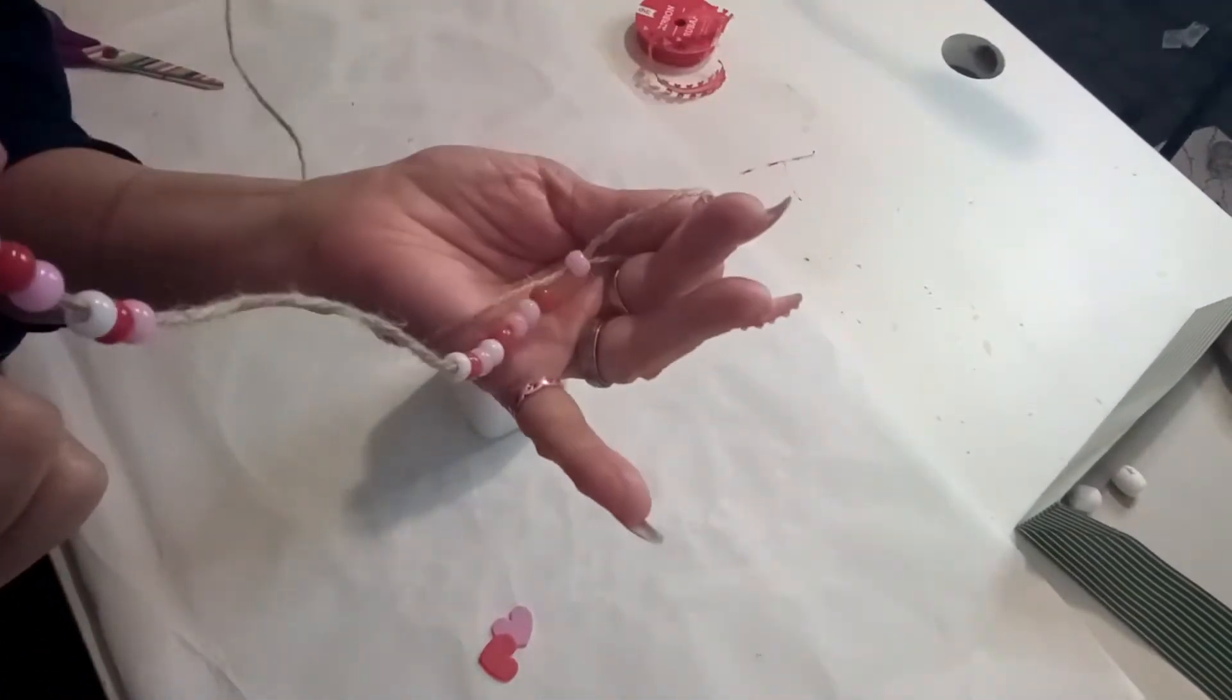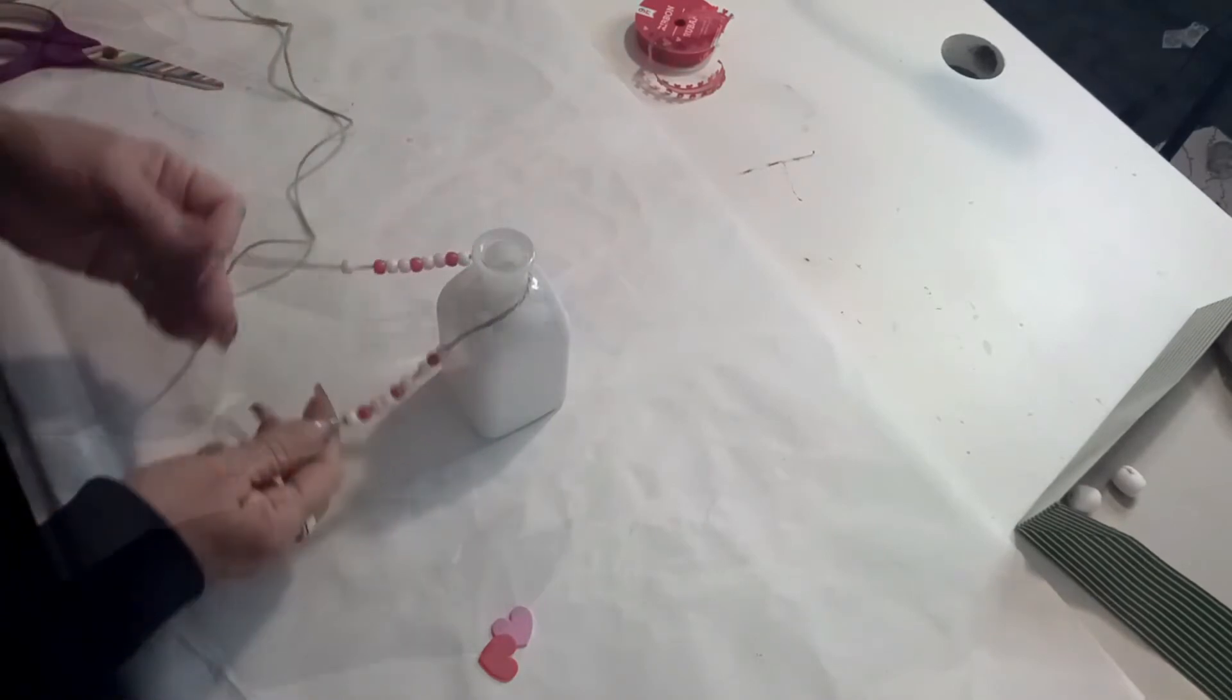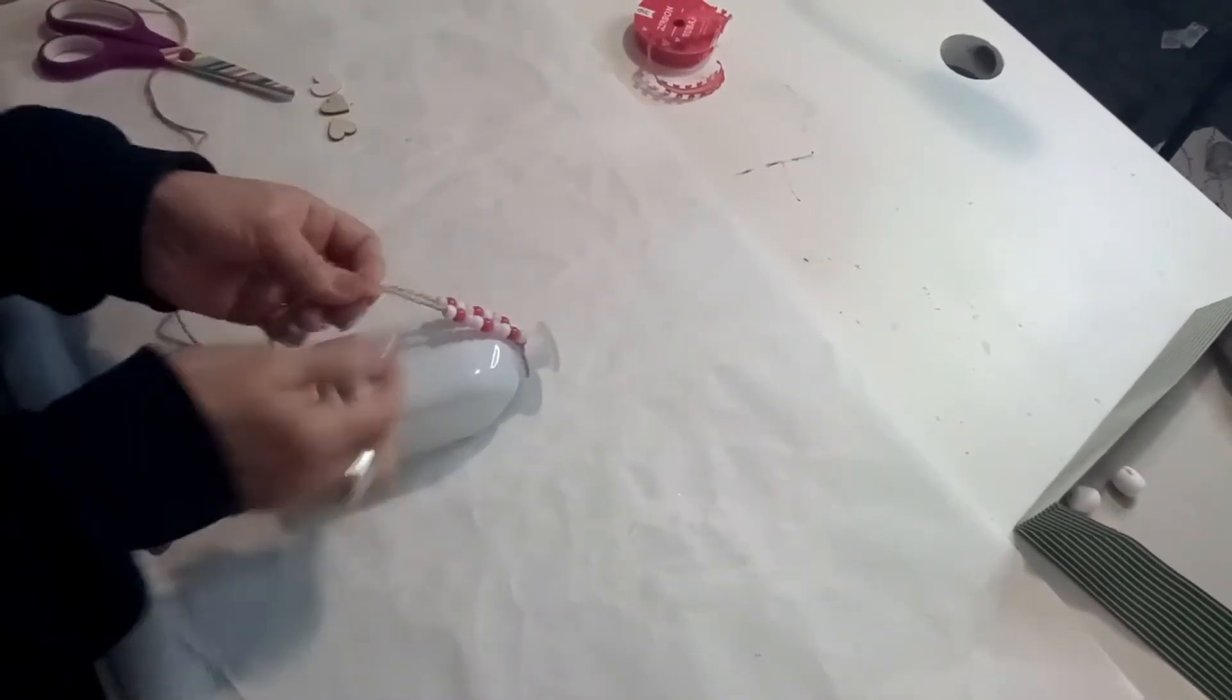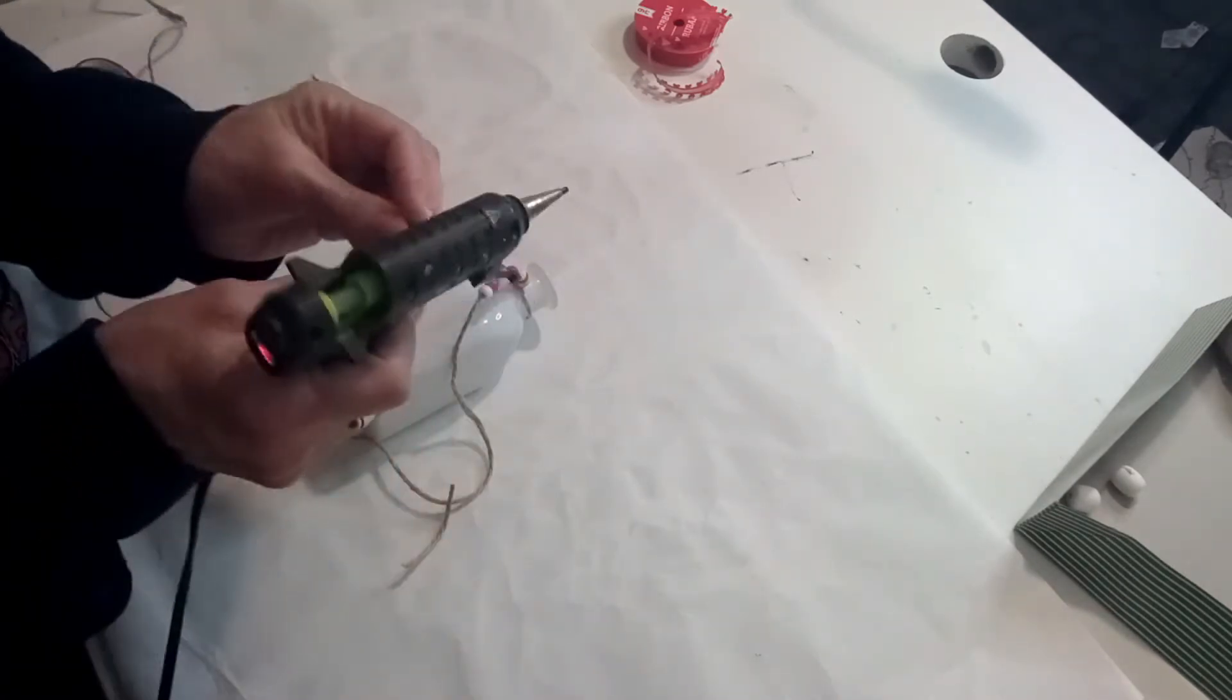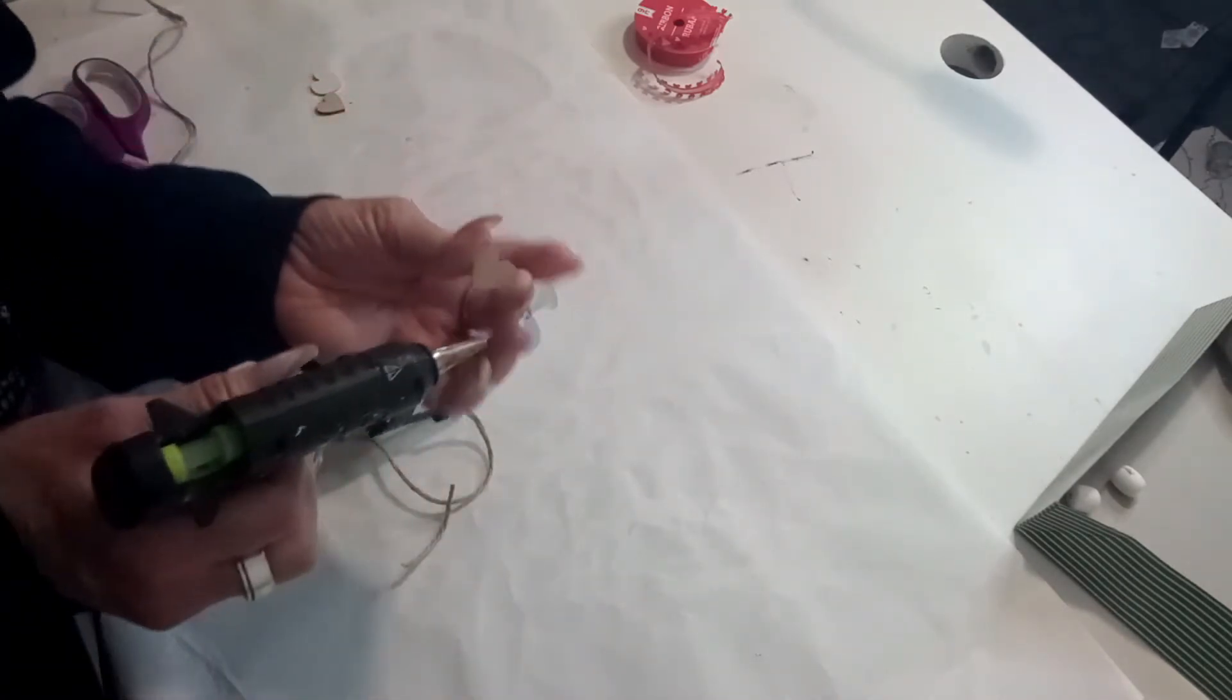And then I'm going to tie it to the top of this vase. And I also have this little heart that came in a big bag full of all kinds of wood goodies from Dollar Tree.